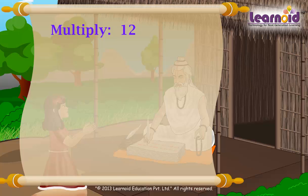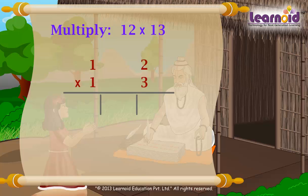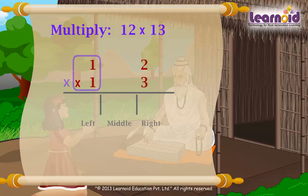Multiply 12 by 13. We will draw lines to make 3 parts of the answer: left, middle, and right. Starting from the left, multiply vertically: 1 into 1 equals 1. Write it as the leftmost part of the answer.